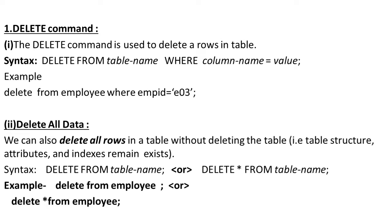Suppose we have a table called 'employ'. We need to delete a record — we need to delete a row. So we use the command: DELETE FROM employ WHERE empid = 'E03' semicolon.